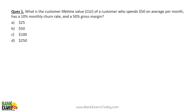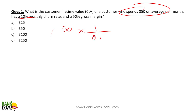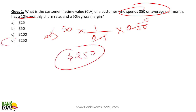Question: What is the customer lifetime value of a customer who spends $50 on average per month, has a monthly churn rate of 10%, and gross margin of 50%? The average spend is $50. Retention period = 1 ÷ 0.1 = 10 months. Gross margin is 50%. Applying the formula: $50 × 10 × 0.5 = $250. So $250 is the correct answer. Not complicated at all.